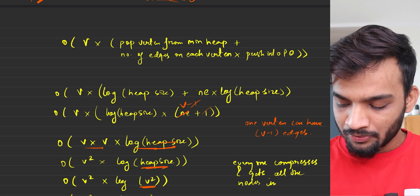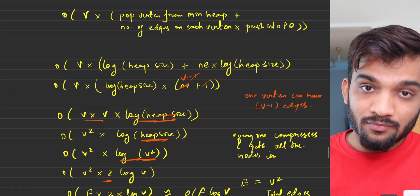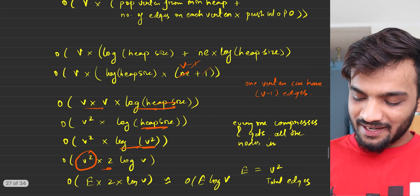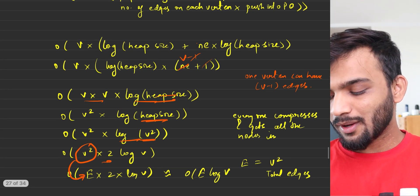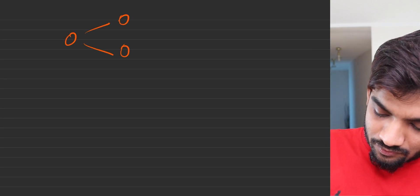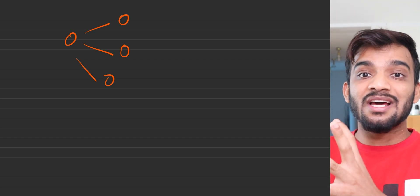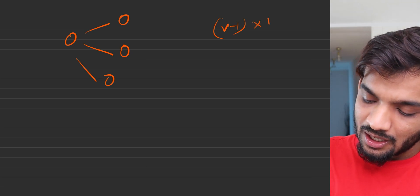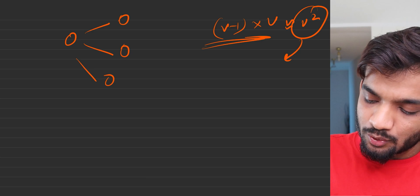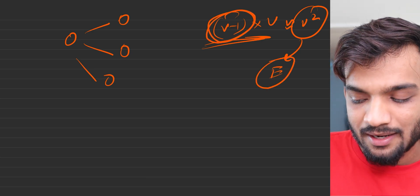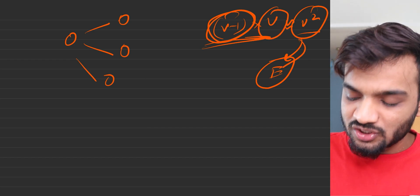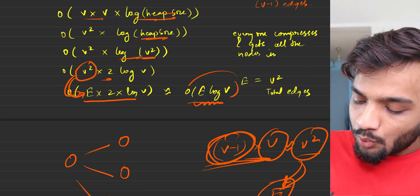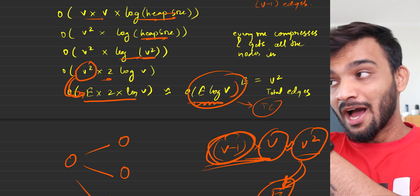So log of heap_size = log(V^2) = 2 log V. Now, V^2 is also the total number of edges in the densest possible graph — if every node has V-minus-one edges and there are V nodes, that's V*(V-1) ≈ V^2 edges. So we can replace V^2 with E. The full expression becomes E * 2 log V, which simplifies to E log V — the time complexity of Dijkstra's algorithm in the worst case.